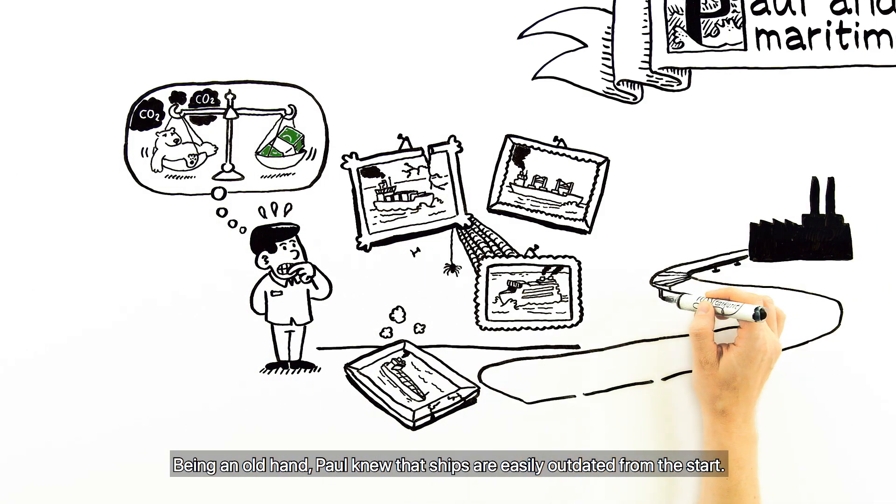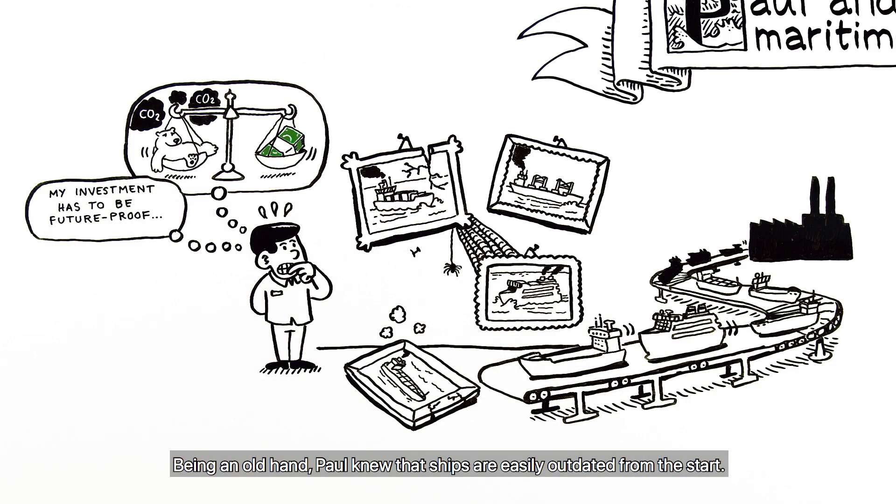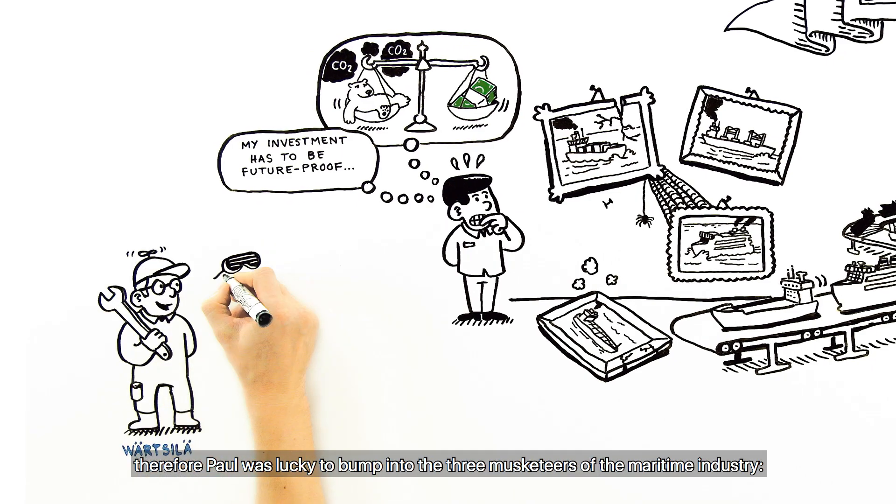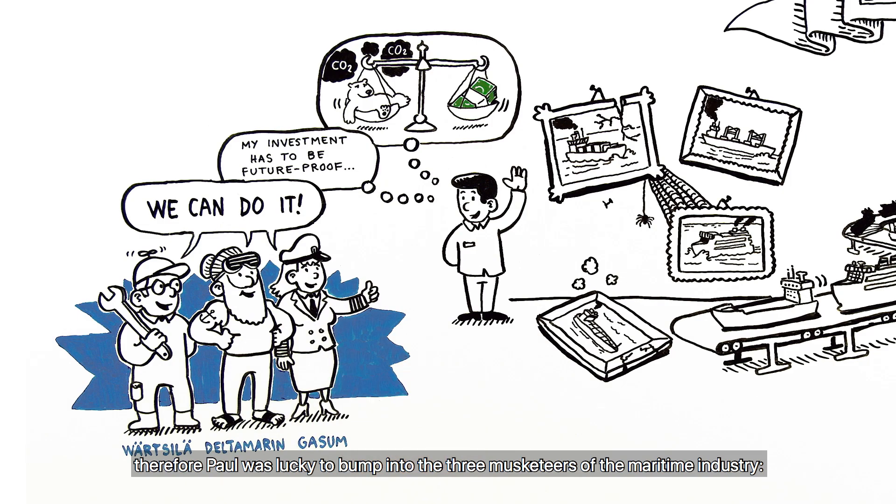Being an old hand, Paul knew that ships are easily outdated from the start. No one can solve this puzzle alone. Therefore, Paul was lucky to bump into the Three Musketeers of the maritime industry.